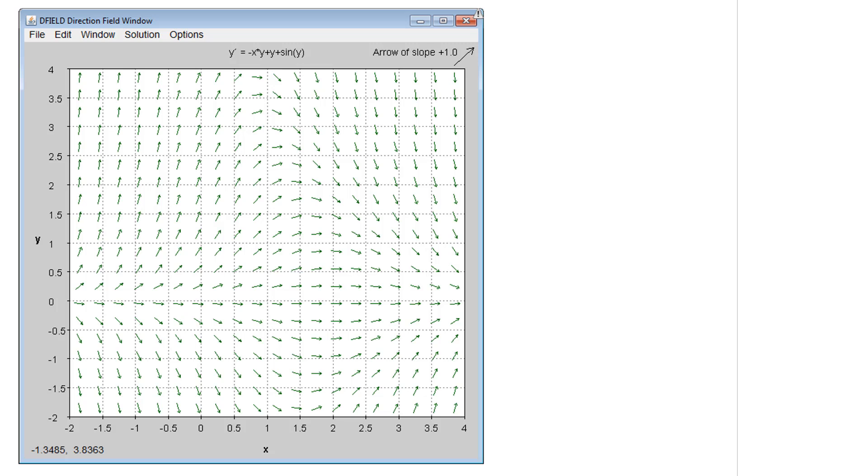I'm going to scroll up here and I've got a screenshot of the d field plot for that differential equation. So I just want to look a little bit at what we're looking at here and think a little bit about what this graph is telling us and about what we expect our answers to look like. So we had dy/dx equals negative x times y plus y plus sine of y. And you can see at the top of the window, that's what I've got typed in here. And we had a point, an initial point of 0, 1.